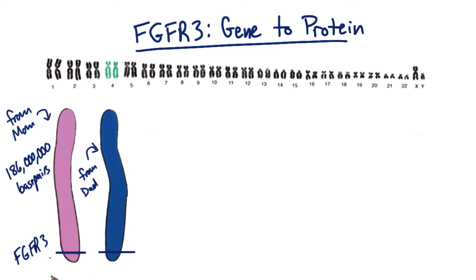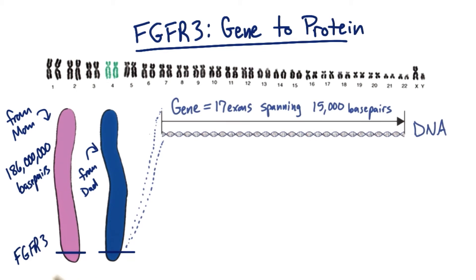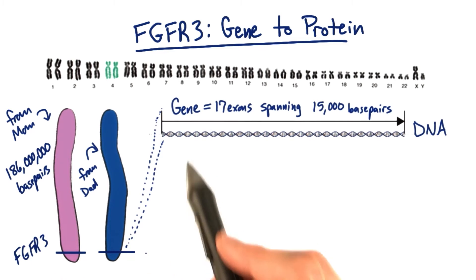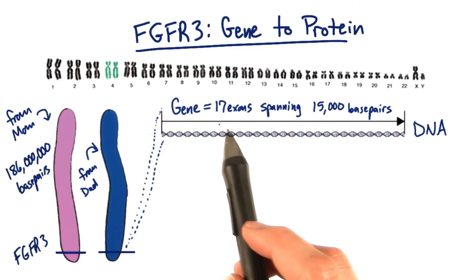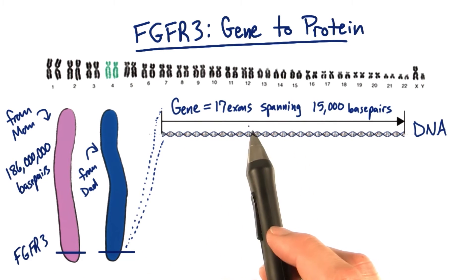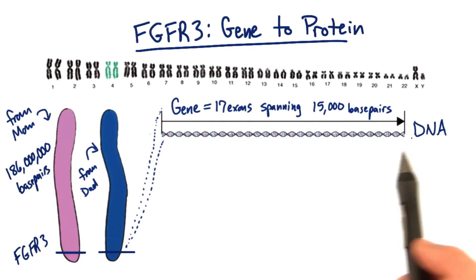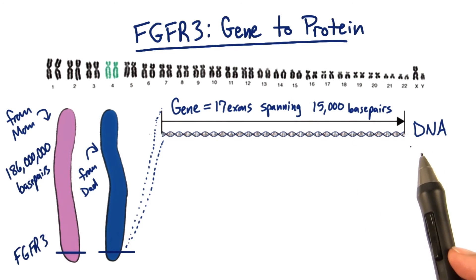The FGFR3 protein can be found near the end of chromosome four. The FGFR3 gene itself consists of 17 exons spanning over 15,000 base pairs.